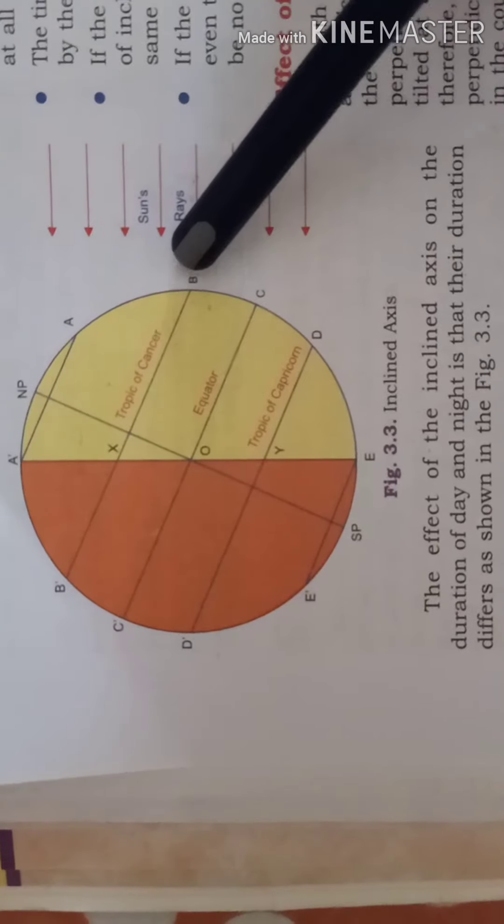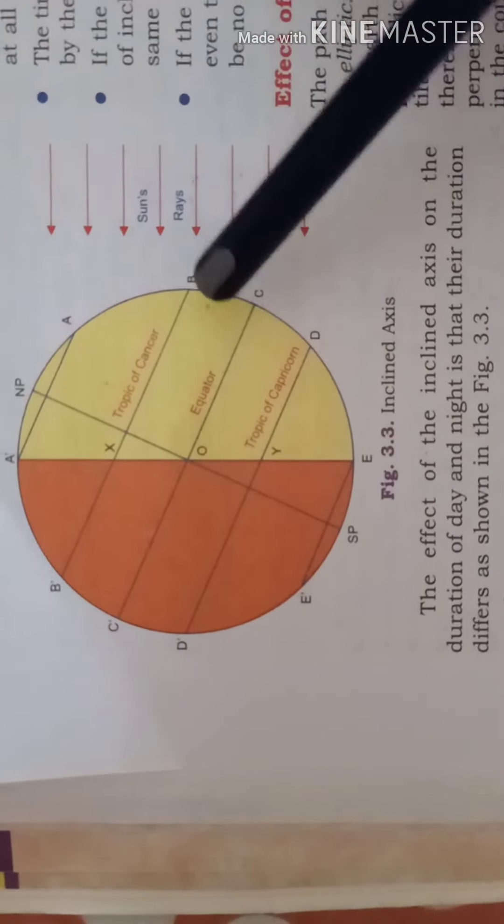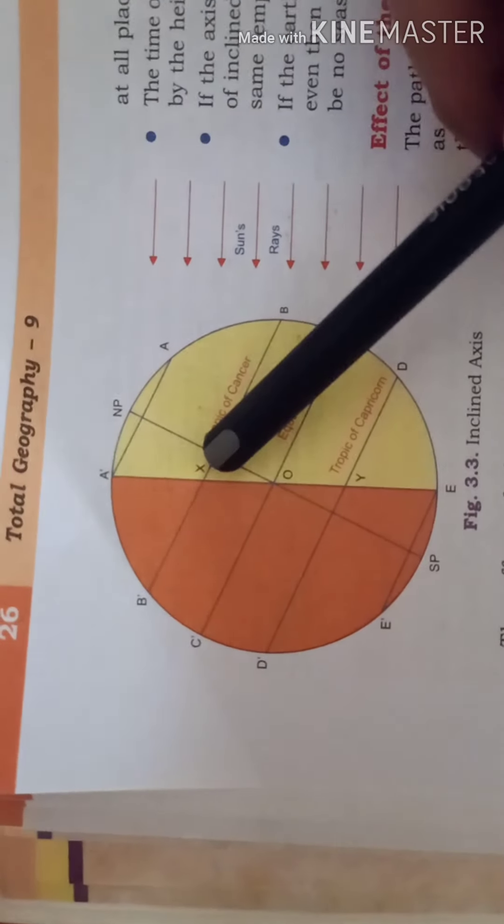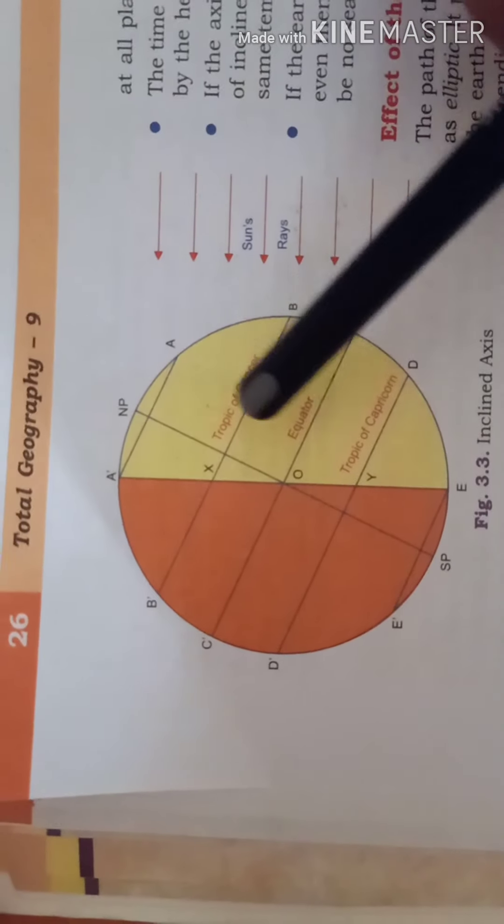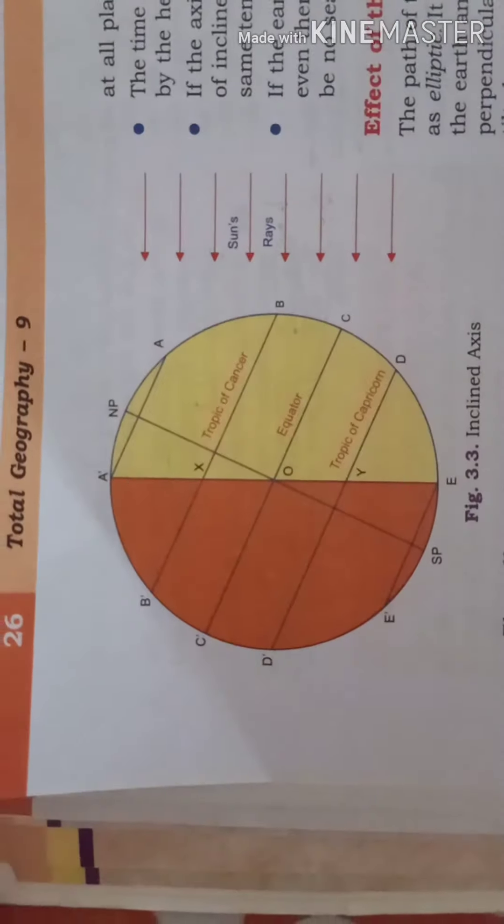Over here if you see place B will be at position B' after 12 hours but the distance BX is greater than B1X. So the days over here are longer than the nights.